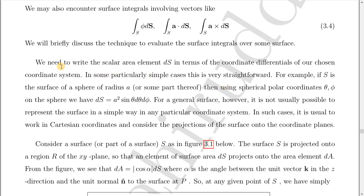First, the most important part is we need to write the scalar area element dS in terms of coordinate differentials of our chosen coordinate system. In some particular simple cases it is very straightforward. For example, if S is the surface of a sphere of radius a, then using spherical polar coordinates on the sphere we have dS = a² sin θ dθ dφ. For a general surface, however, it is not usually possible to represent the surface in a simple way in any particular coordinate system.